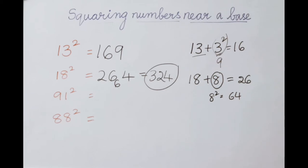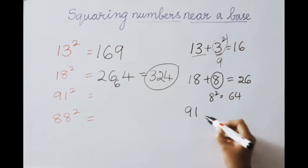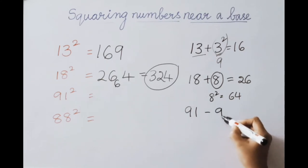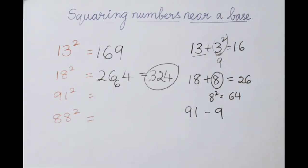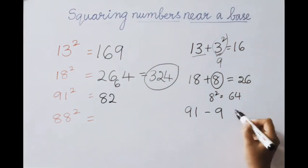Next example: 91 squared. Here 91 is nearer to 100 and is below 100. So 100 minus 91 equals 9 — that is the deficient value. For 91, subtract the deficient value: 91 minus 9 equals 82. So 82 is the first part answer.